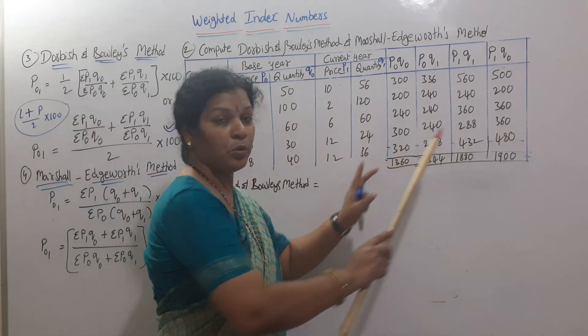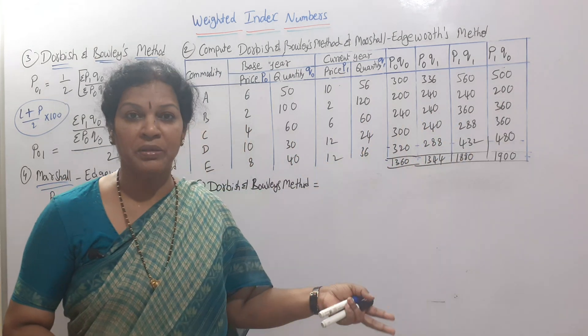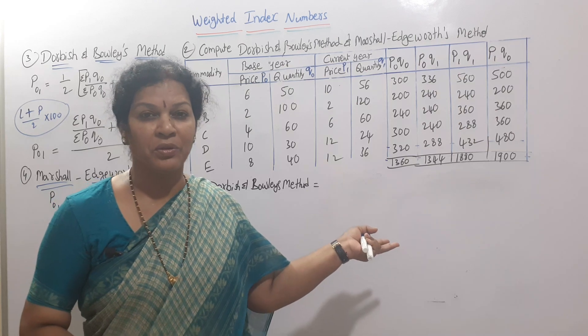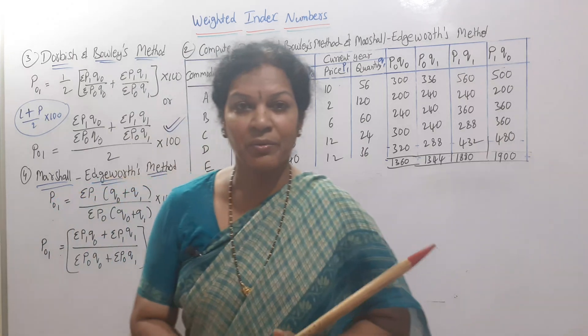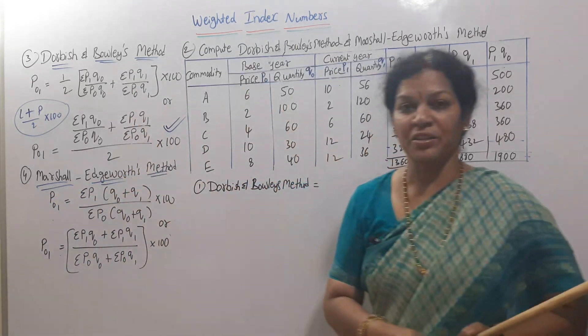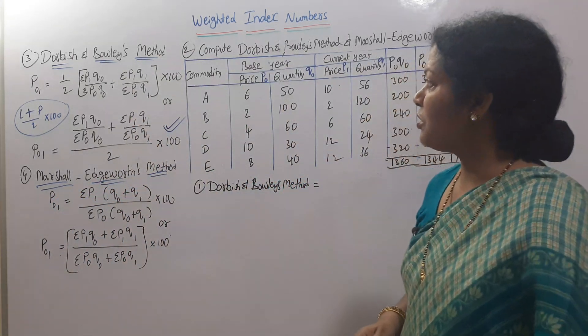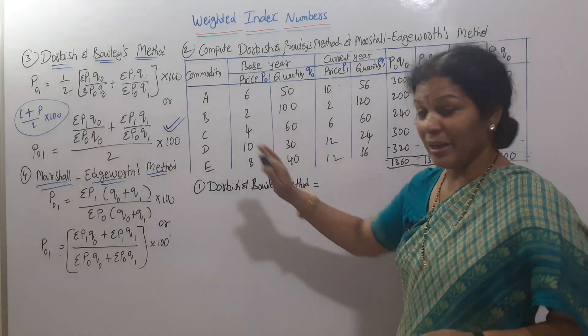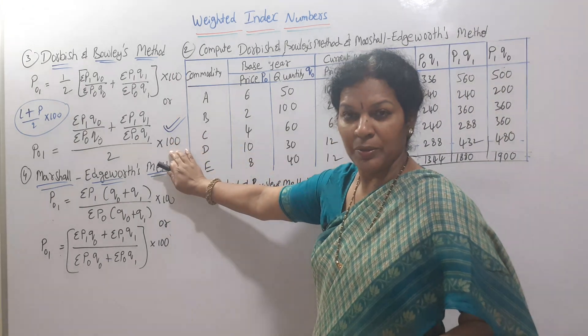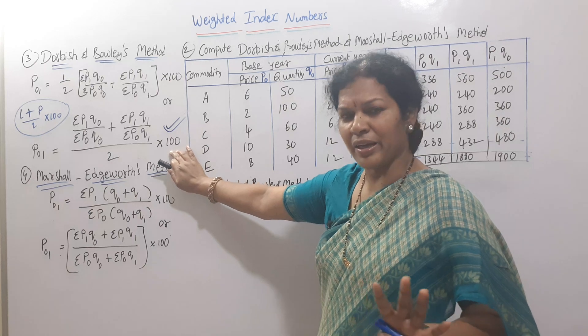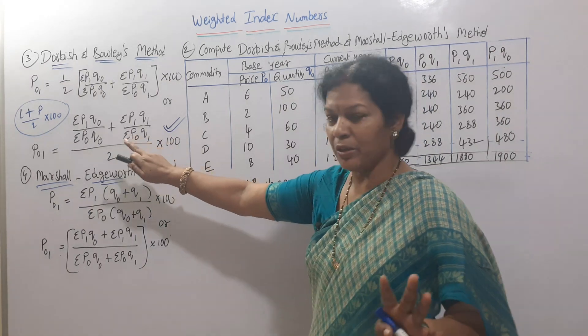The totals are already done, so the problem is easy - no need to waste time on multiplications. Now we apply the formulas. First is Dorbish-Bowley method. The formula is already there, so I'll directly apply it.